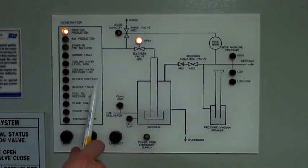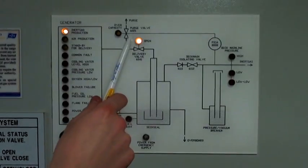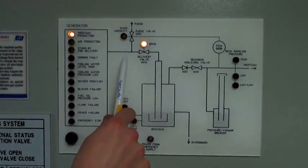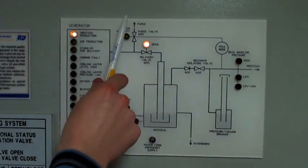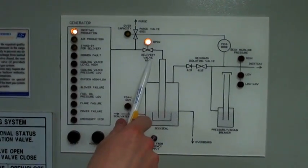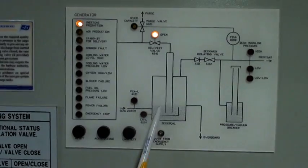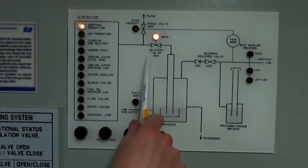After the inert gas passes through the engine room and scrubber, it goes through these two valves either to the atmosphere, or if it's delivered on deck, then it goes through the deck seal which is located on deck.